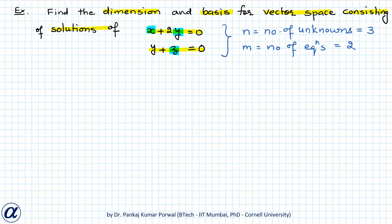So we have a system consisting of two homogeneous equations in three unknowns, and the solution space for this system of equations can be written as a space consisting of three-dimensional vectors x, y, z belonging to R³ such that x plus 2y equals 0 and y plus z equals 0, and we want to find the dimension and basis for this vector space capital X.